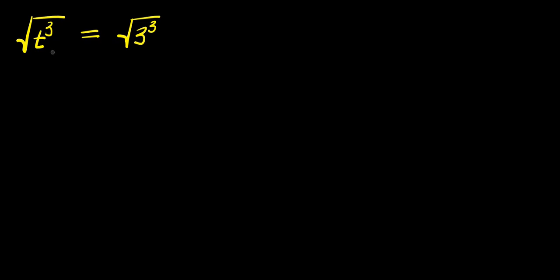Hello. How to solve this equation: we have square root of t to the power of 3 equals square root of 3 to the power of 3. Here is the left hand side of this equation and here is the right hand side. For us to proceed, we need to remove the square root from both sides of this equation.